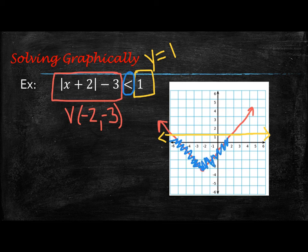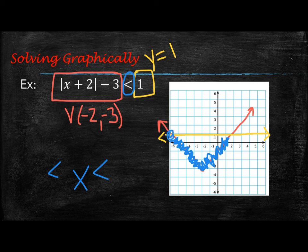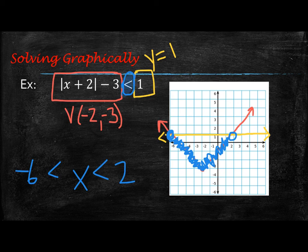You can see that because these pieces are connected, this is going to be a between statement. We're going to have x in the middle surrounded by less than symbols, with the lowest value at the left intersection — which is at x equals negative 6 — and the highest value at x equals 2. Since this inequality has no line under it, we keep the line off our answer, and this will be our solution.